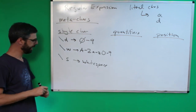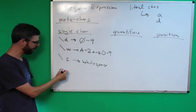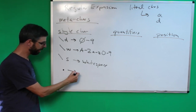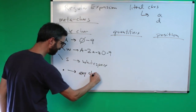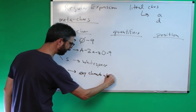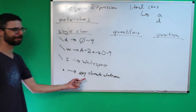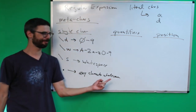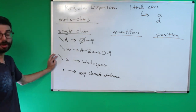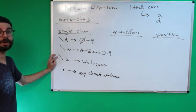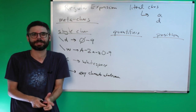Another key meta character, which I talked about in the previous video, is dot. Dot matches any character whatsoever — any character. It's a strange one to use and you've got to be very careful, because there's this concept I'll get to later of a greedy regular expression.